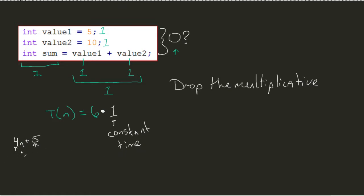Just like this algorithm here was dependent on an N, this is dependent on that 1, that constant time. And so, as a result, since we're going to drop the multiplicative, we could say that this algorithm is big O of 1.